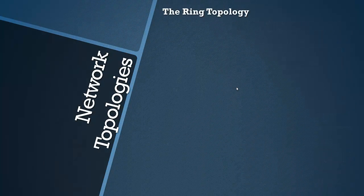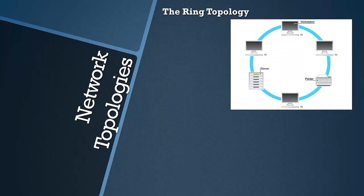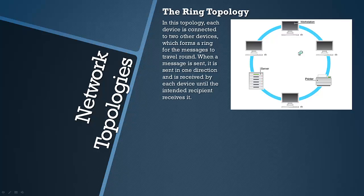Next is the ring topology — you can see why it's called that. Each device is connected to two other devices, forming a complete ring. Messages travel around in one direction. For example, if a workstation sends a message to a printer going clockwise, it passes through intermediate workstations along the way. Those workstations see the message, and then it's accepted by the printer, but it won't be seen by devices on the other side of the ring.